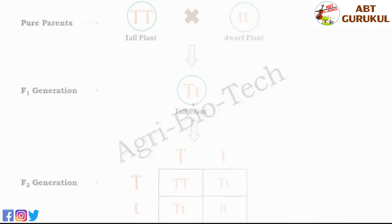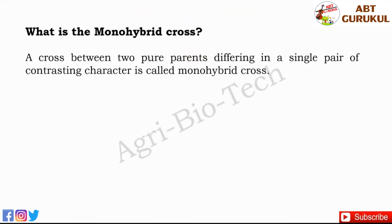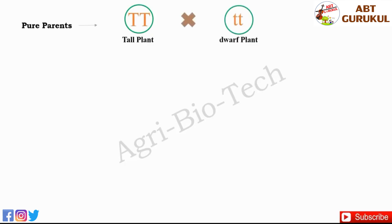This law can also be explained with the help of a monohybrid cross. A monohybrid cross is a cross between two pure parents differing in a single pair of contrasting characters. Mendel first selected some pure tall pea plants and pure dwarf pea plants and then crossed them. After crossing, he found that all the plants in the F1 generation were tall.